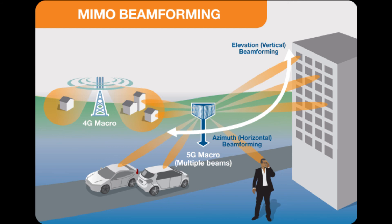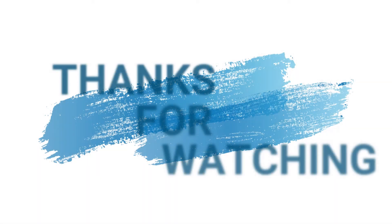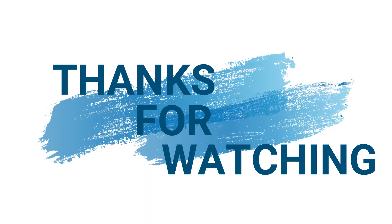This increases efficiency as it reduces interference from unwanted radio signals. Massive MIMO antennas and advanced beam steering optimize EMF exposure and increase overall network efficiency.